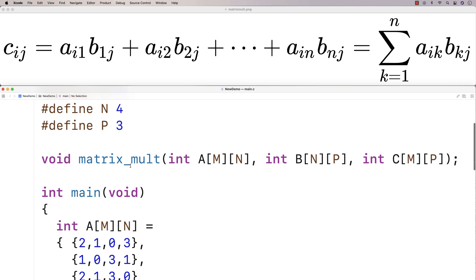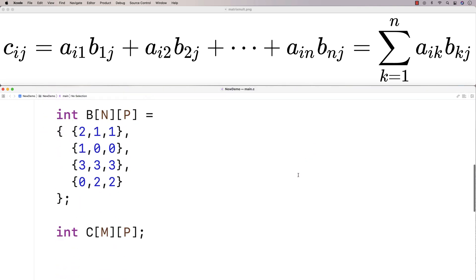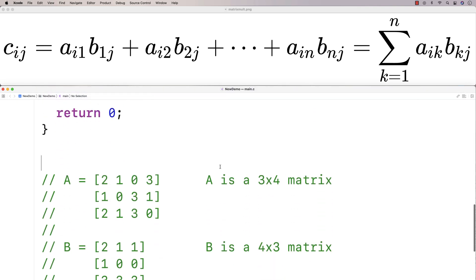So what I've got here is a function called matrix_mult and it's going to accept three 2D arrays as arguments. The first two are going to be the input matrices. The third one is going to be where we store the result. So we'll copy and paste this and we'll provide a definition of the function down here.